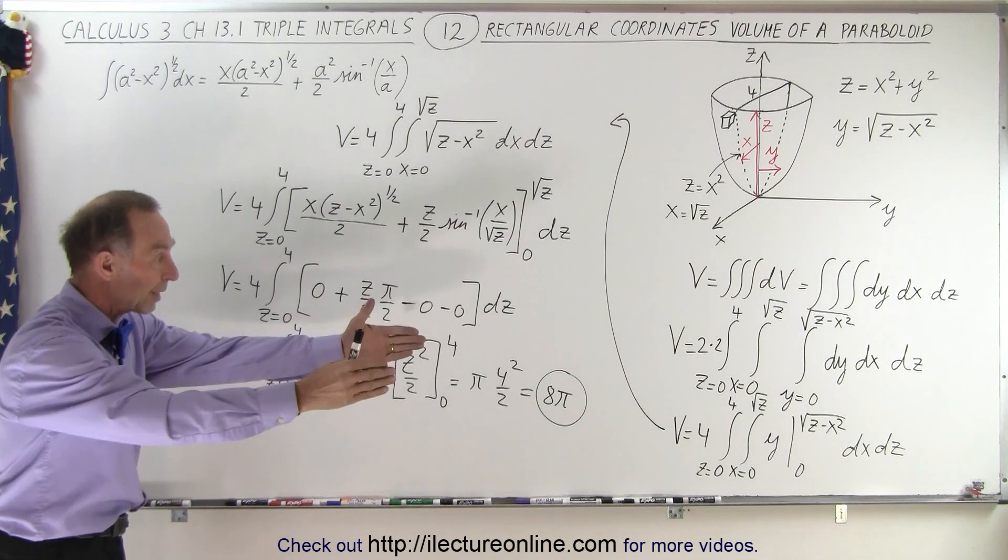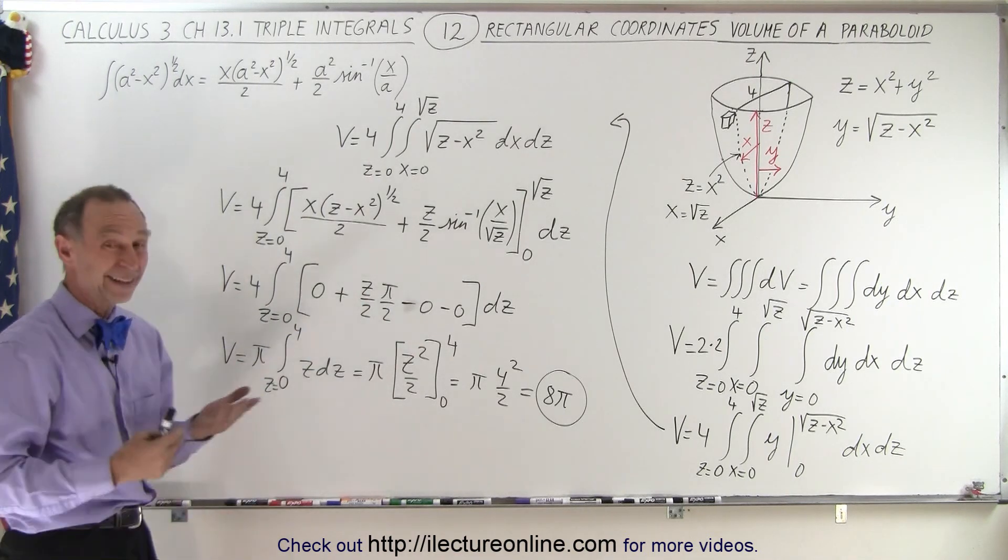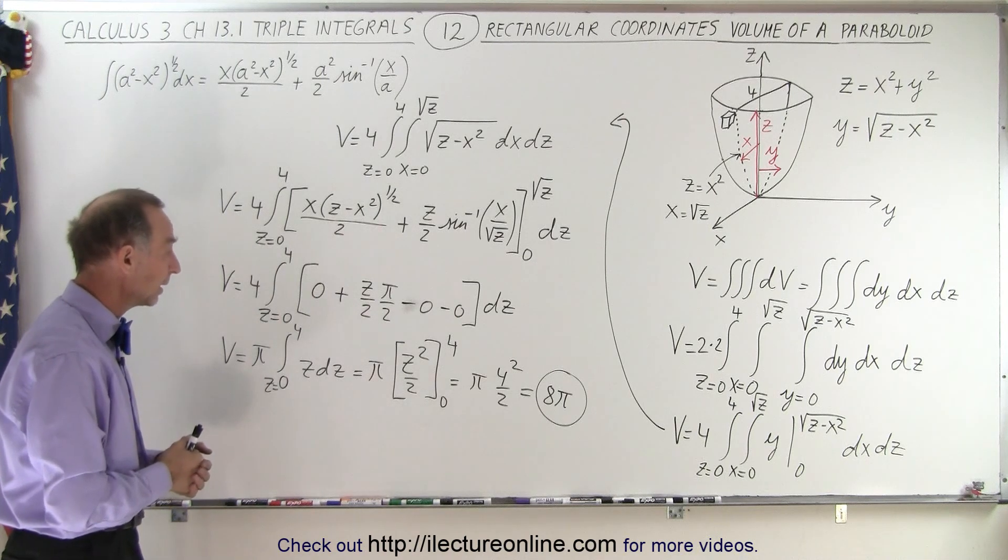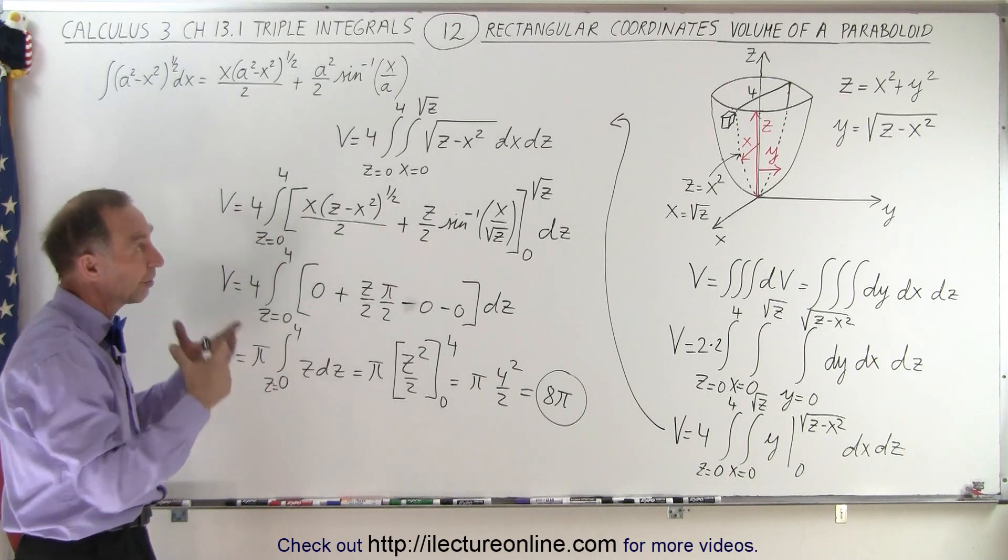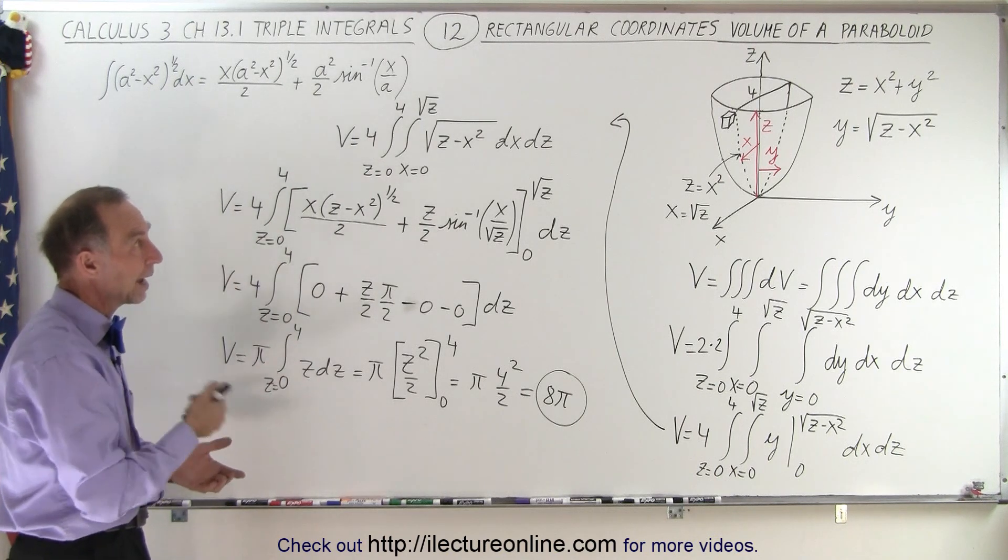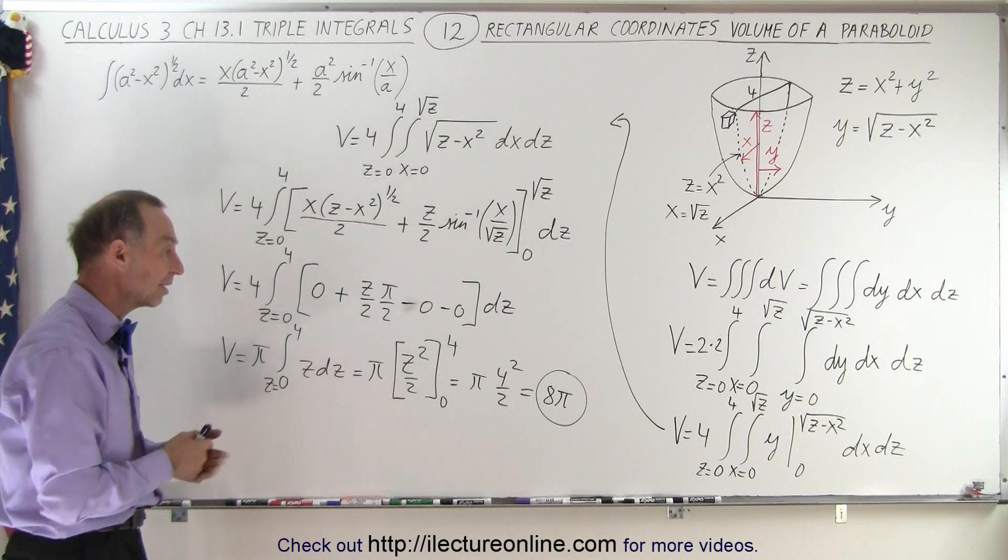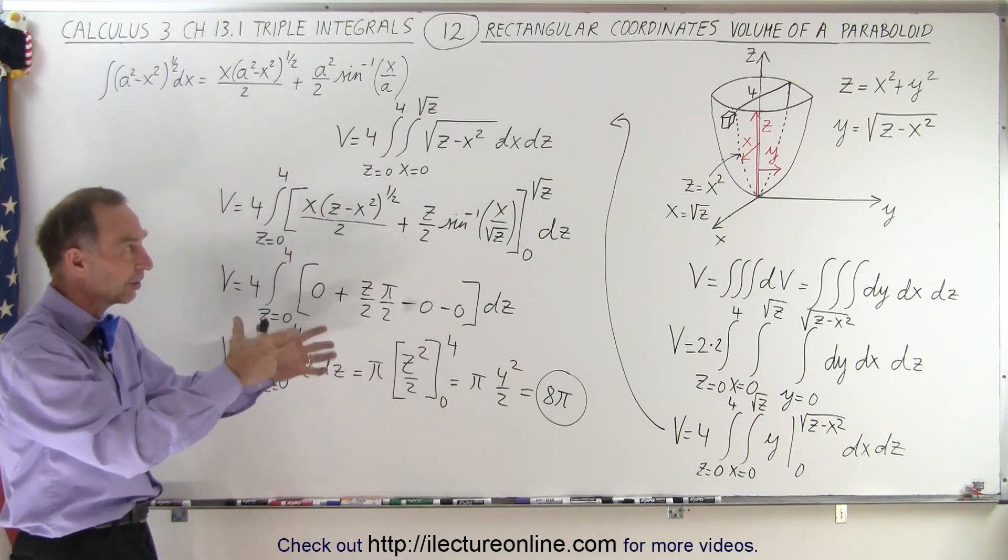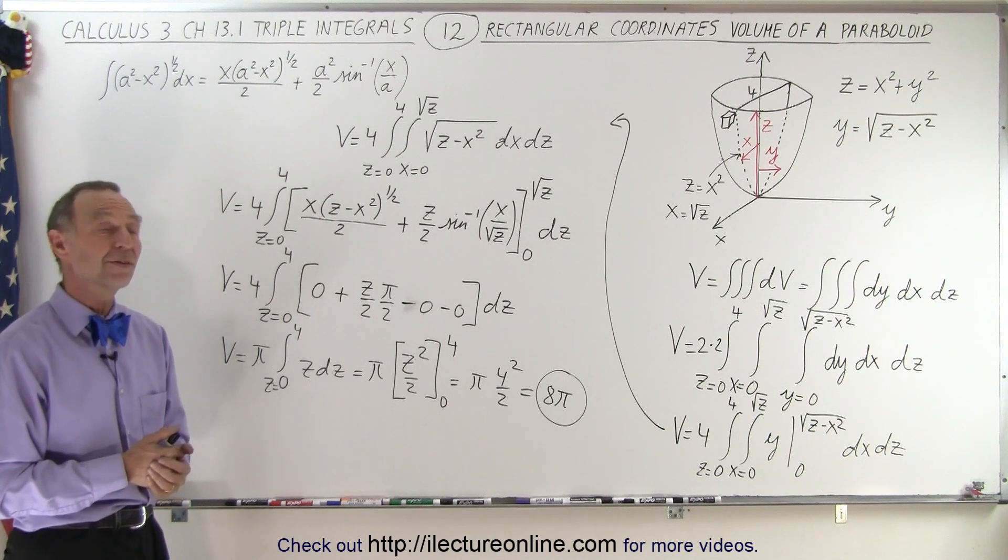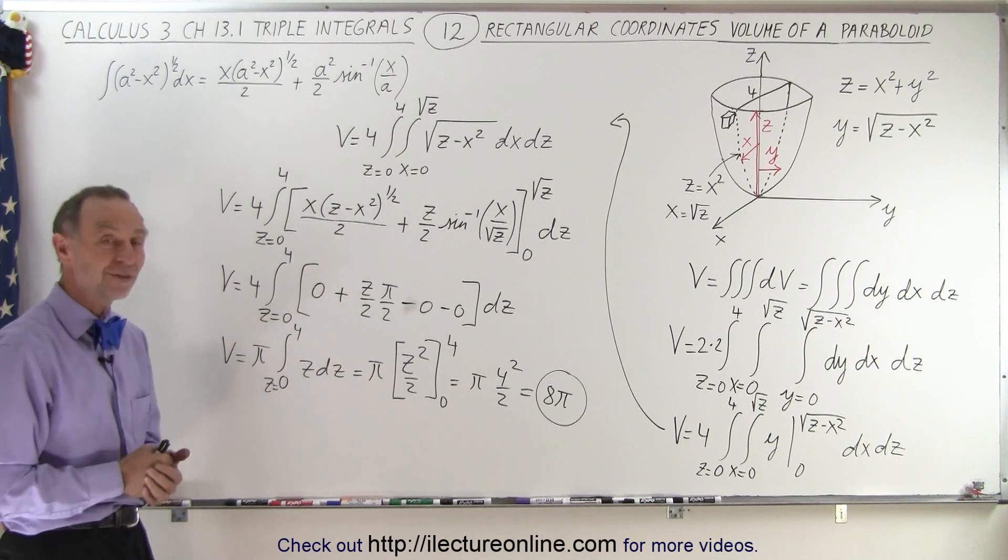And if you remember right that is the result that we got on the previous video when we had the paraboloid pointing in the y direction. So it looks like we got the same answer again, we probably did it correctly. It's about half, or it's exactly half the volume of what it would be if we had the cylinder of radius 2 and height 4, and that looks like it's about right that this is half the volume of what you would have had the cylinder there instead of paraboloid. So looks pretty reasonable and that is how it's done.